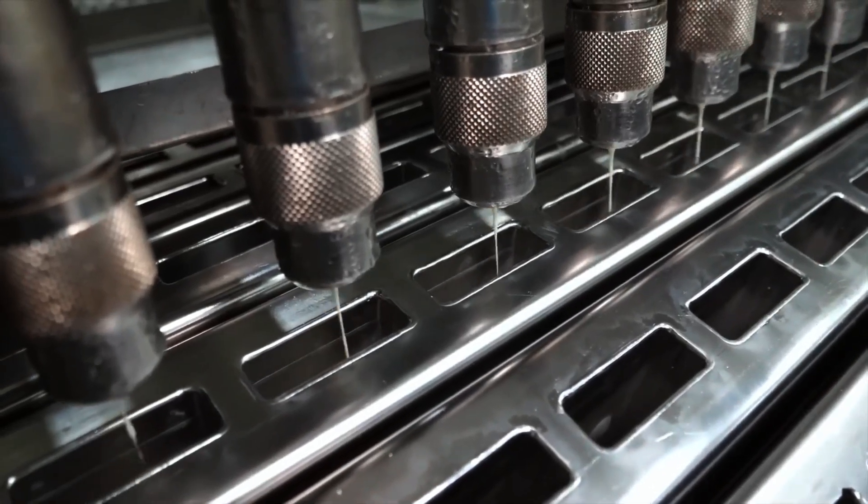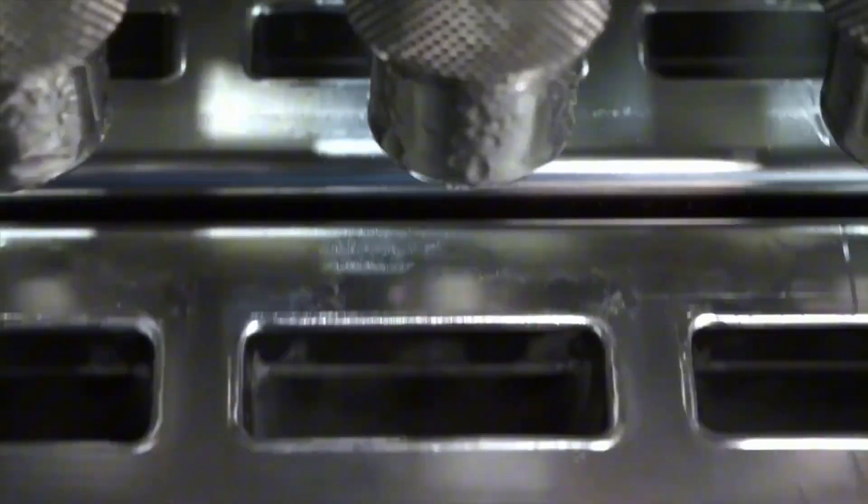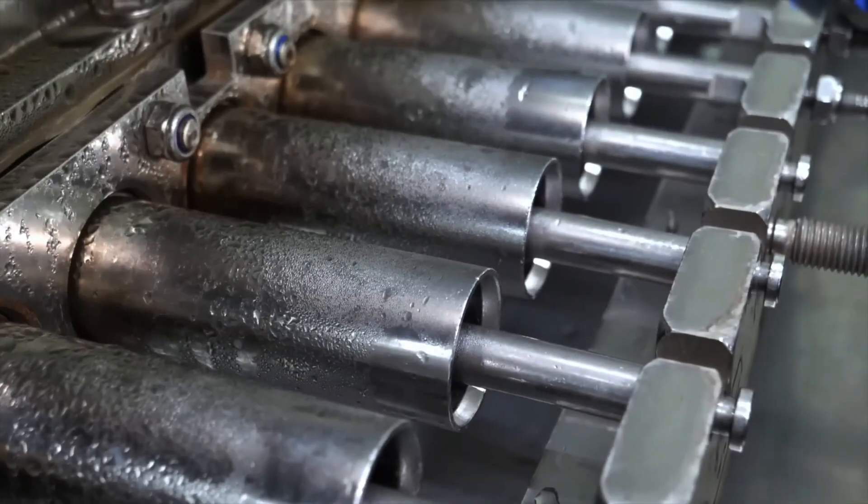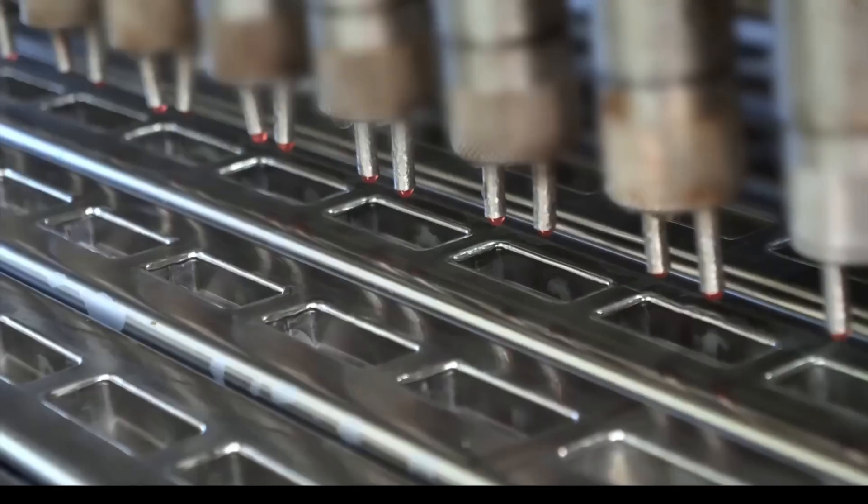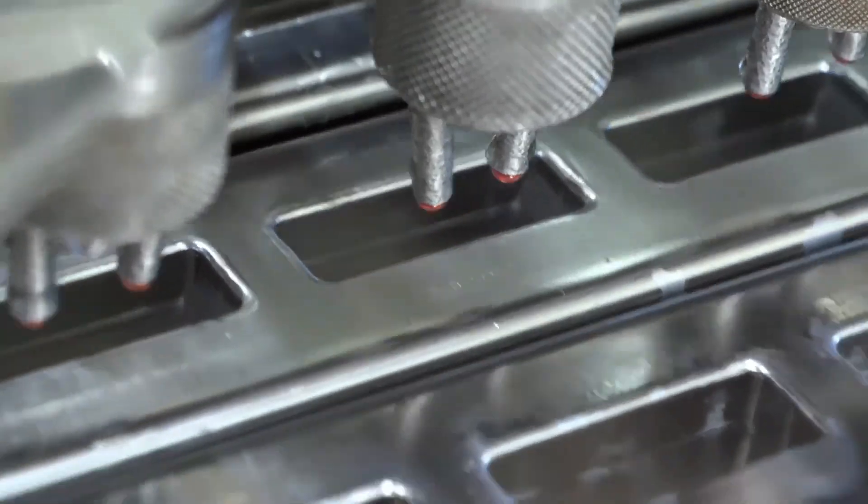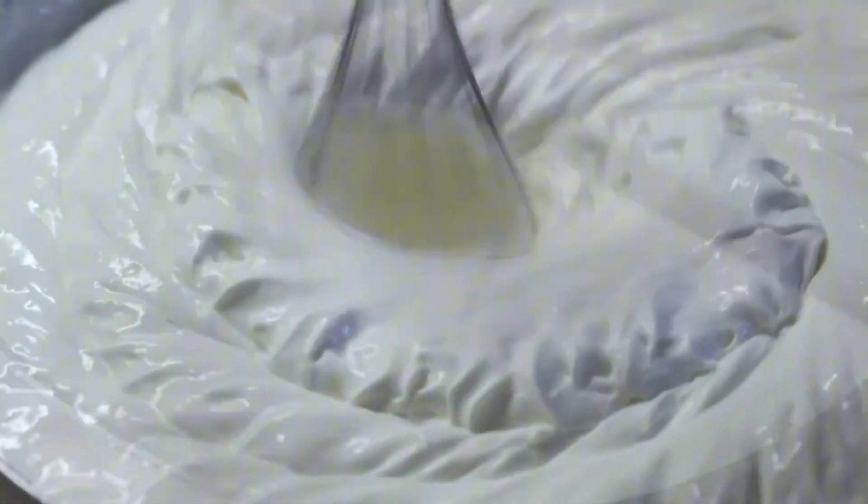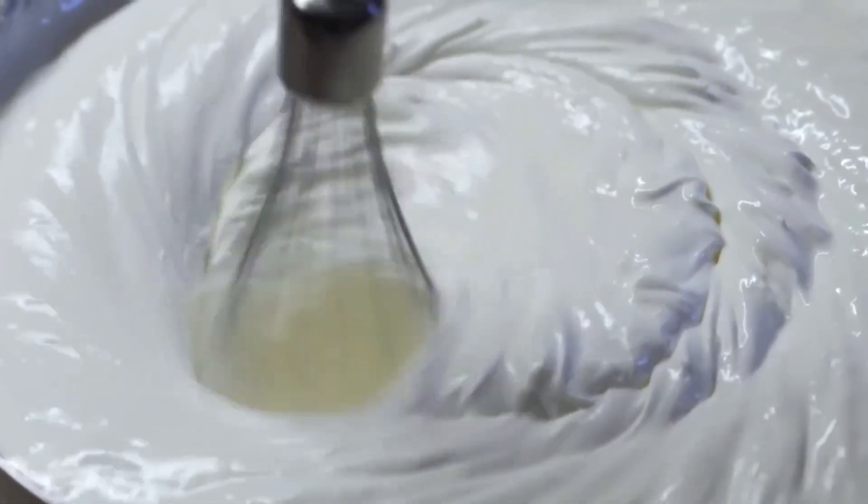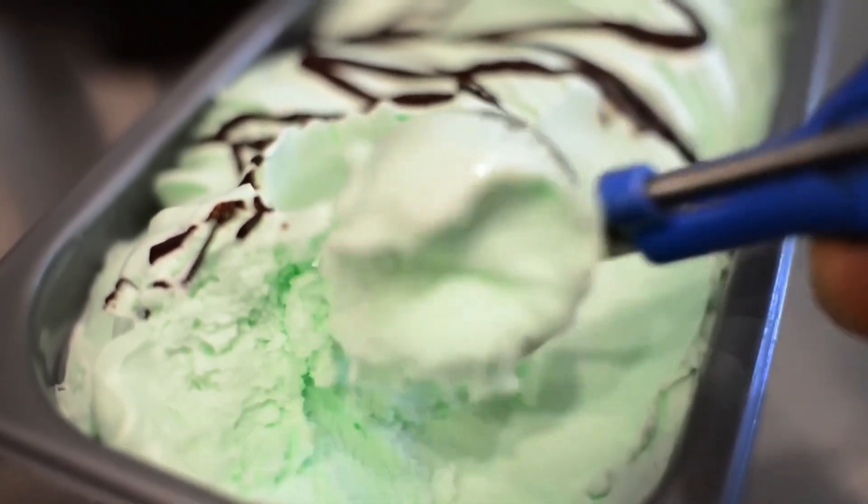It's the moment when liquid preparation turns into a true dessert in the making. While the base is aging, food technologists work their magic on flavor. From classic vanilla to exotic mango chili blends, every drop of flavoring is measured with surgical precision. Natural extracts, fruit purees, chocolate, or nut pastes. All of it is carefully tested and perfectly aligned with the recipe. In modern factories, automated dosing systems are used. These machines introduce flavoring at the exact moment when the mix's temperature and viscosity are optimal for even distribution.